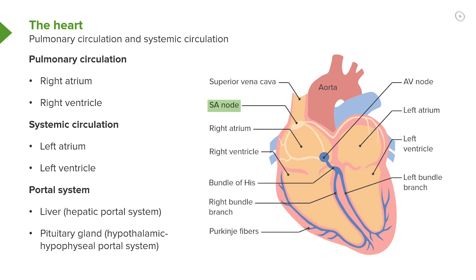Now try to identify the SA node, or sinoatrial node. You can see very pale lines running from that node extending into the right atrium and the left atrium. These represent part of the conducting system I'll refer to later. Also, look at the blue circular structure towards the centre of the diagram — that's called the atrioventricular node. It also initiates conduction of impulses into the ventricles, and those impulses travel through certain bundles shown there in blue, which I'll refer to later.